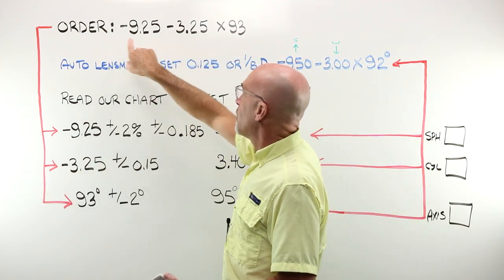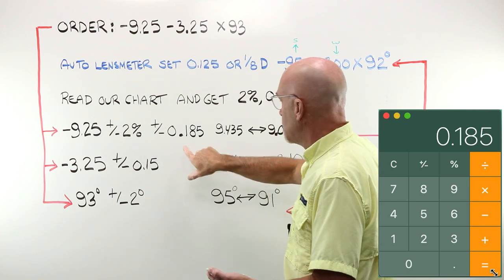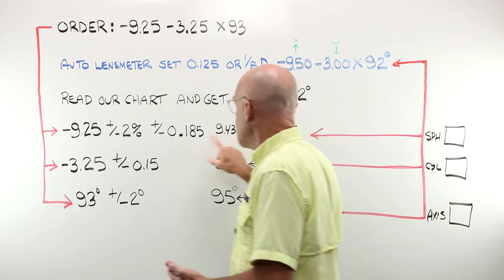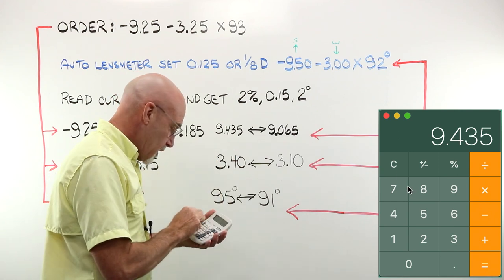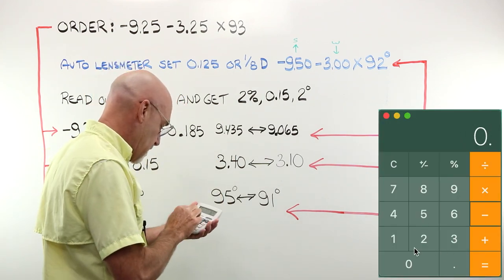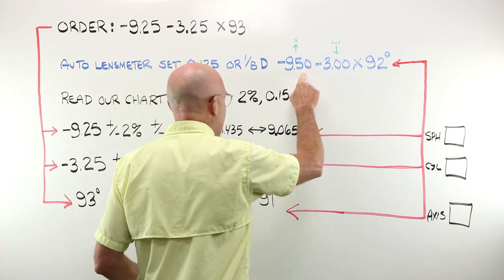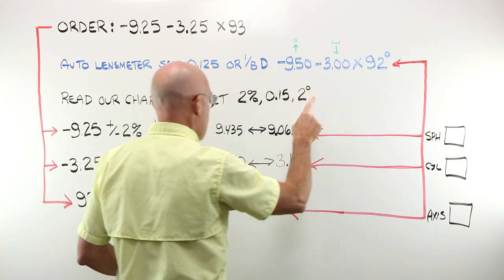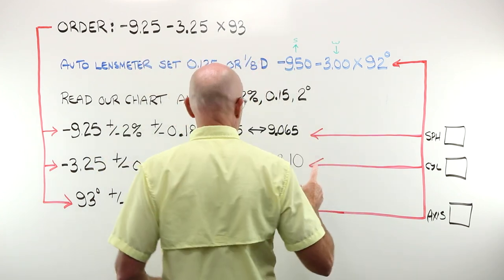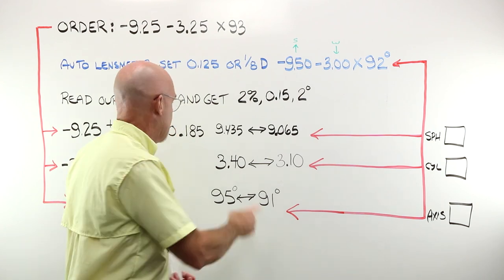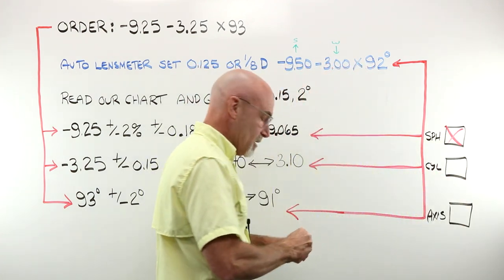We are taking the tolerance for what we actually wanted. 9.25 times 0.02 gives us our two percent, which is plus or minus 0.185. 9.25 plus 0.185, 9.435. 9.25 minus 0.185 gives us 9.065. Does what we actually got minus 950 fall between here and here? The range of tolerance of two percent plus or minus for the 925 we actually wanted? No, it doesn't. Out here or someplace, it's no good. No, the job would not pass for sphere power.